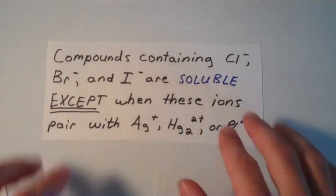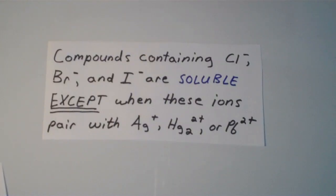Let's go over a second rule. Compounds containing chloride ion, bromide ion, and iodide ion are soluble, except when these ions are paired with silver ion, Hg2 2+ ion, or the lead 2+ ion. Unless the compound has these three ions in it, then it's going to be soluble. Otherwise, it'll be insoluble.